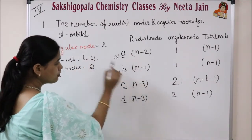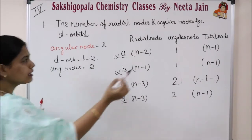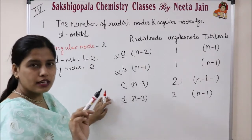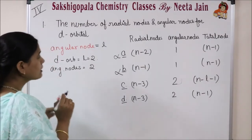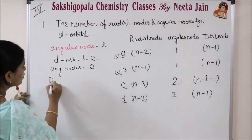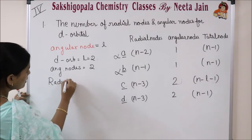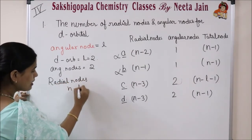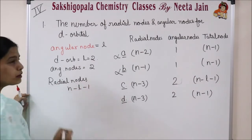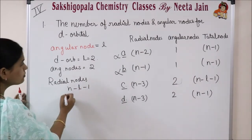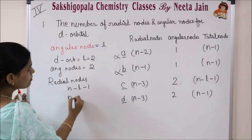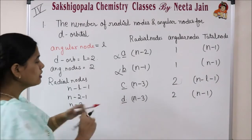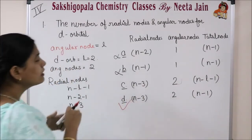Option A and option D cancel out — they are wrong since angular nodes must be 2. Now for radial nodes, the formula is N minus L minus 1. Putting L equals to 2, we get N minus 2 minus 1, which gives N minus 3. So the correct answer is D.